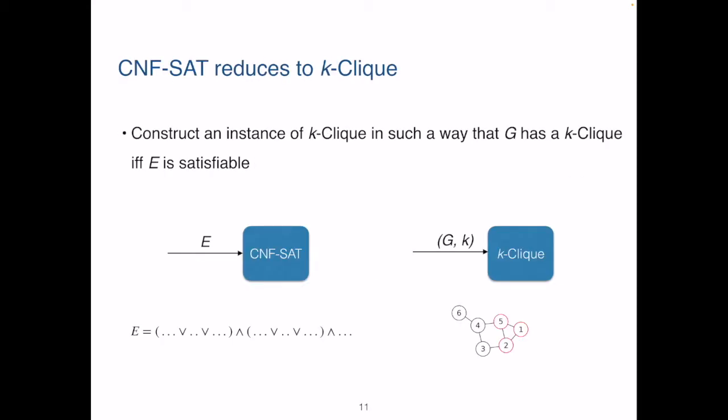In order to show that CNF SAT reduces to k-Clique, we need to transform the Boolean variables in E, an input instance of CNF SAT, to vertices in G, an input instance of k-Clique.